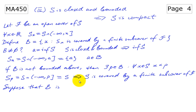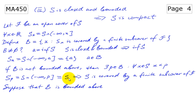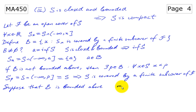Suppose that B is bounded above. Then we have an upper bound and we have the least upper bound. So let M be the supremum of B.